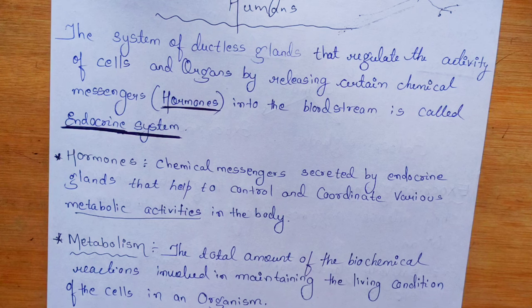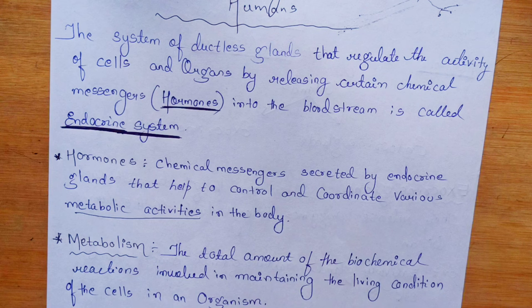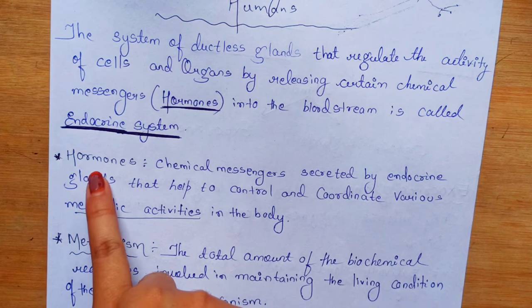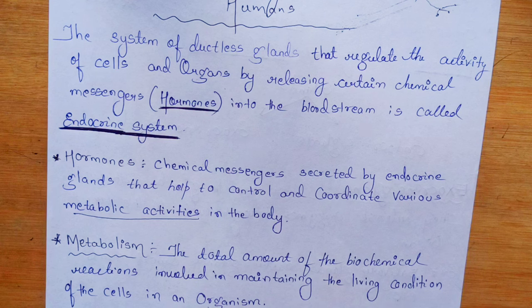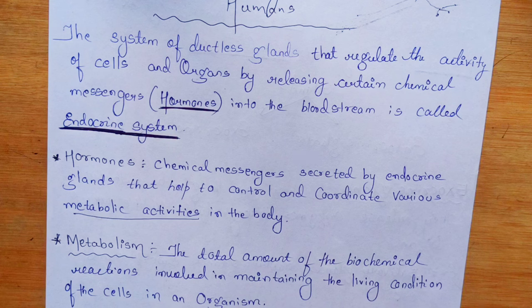Hormones help with growth and development of our body. For example, during teenage years, you will notice many changes — like increase in height, body becoming broader, muscle development. All of these are due to hormones. Some children have mental retardation or slower brain development because certain hormones were not released properly in their body. When hormones are released normally, the body develops normally.